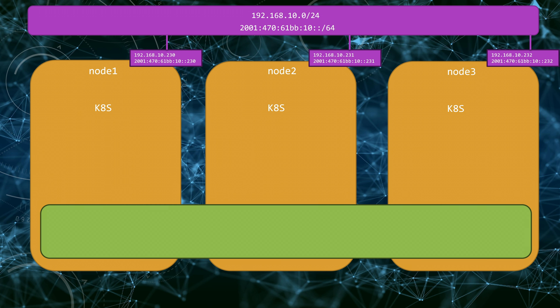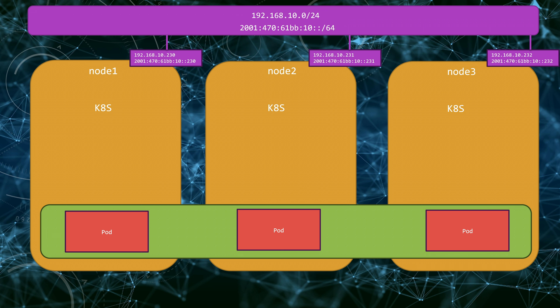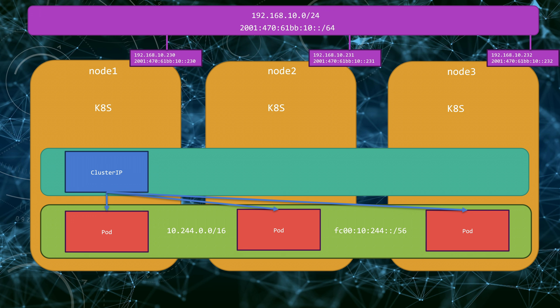On top of that, we have a pod network that spans across all nodes and holds our pods. The pod network is 10.244.0.0/16 for IPv4, and FC00:10:244::/56 for IPv6. Mind that we are using private IPs for both IPv4 and IPv6. Our service network, from which we assign cluster IPs, is 10.96.0.0/16 for IPv4, and FC00:10:96::/108 for IPv6.